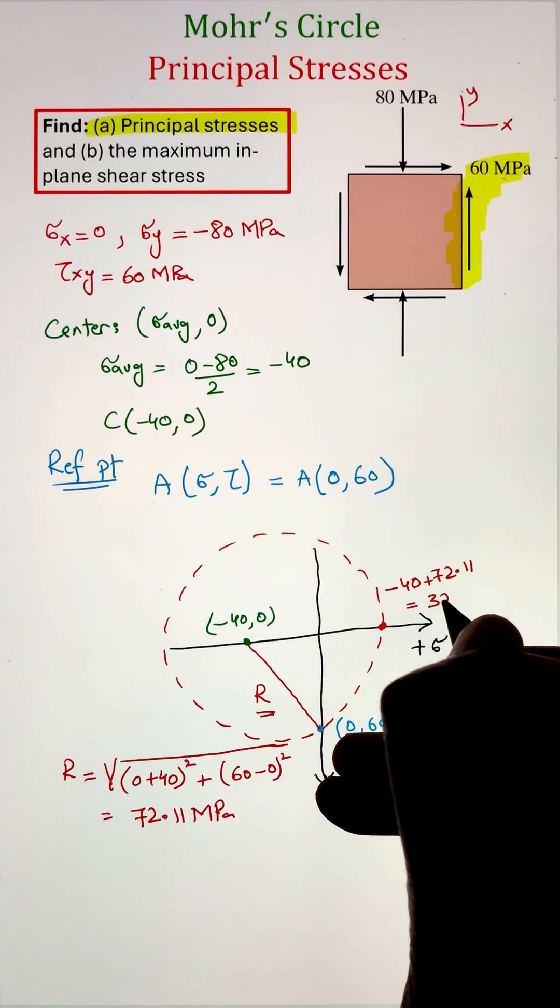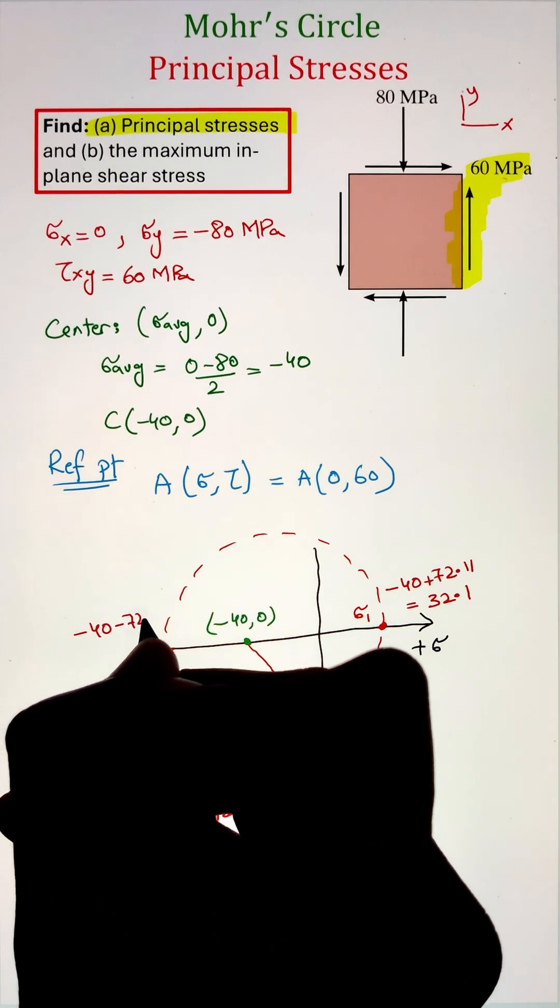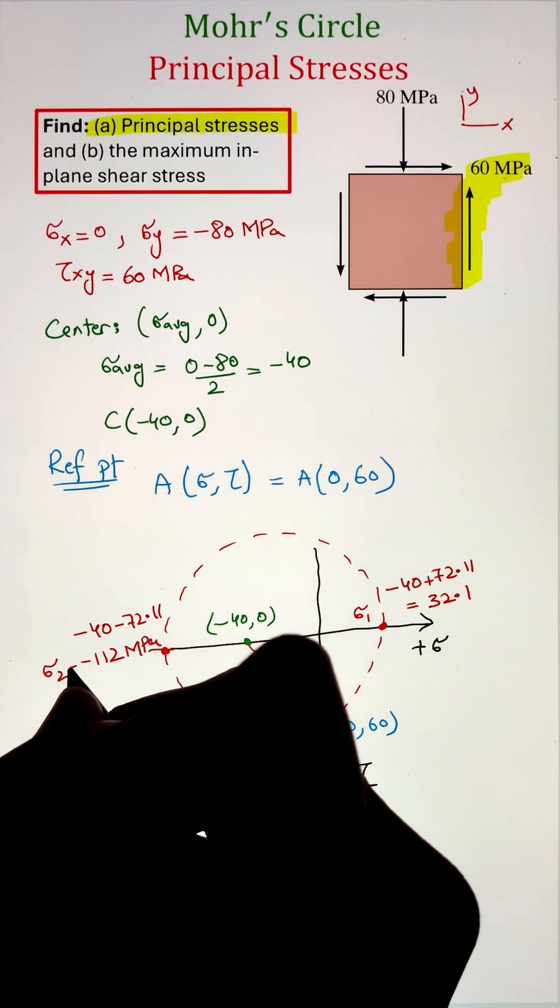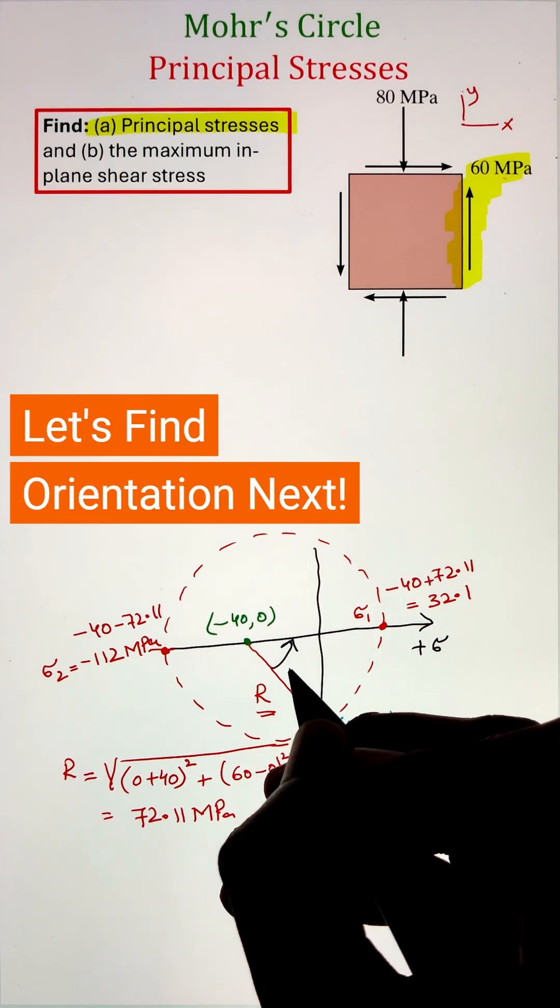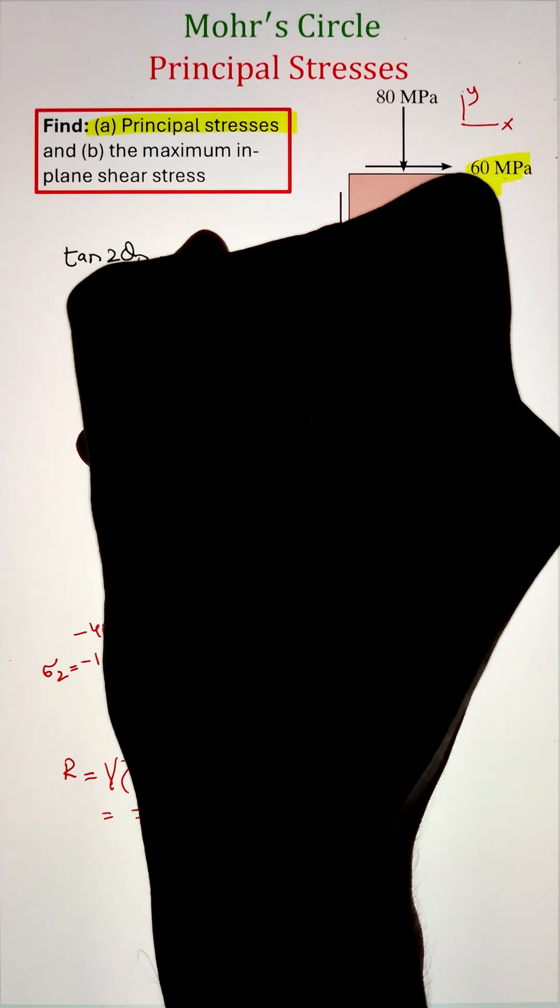Afterwards, we can identify our principal stresses as the extreme points on the horizontal axis. So for sigma 1, we have the center point at negative 40 plus the radius of 72 give us the value of 32.1, whereas on the other side, it gives us the value of negative 112 megapascal.